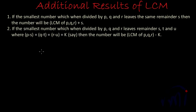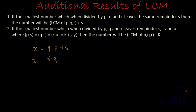Let that number be X. When we divide X by P, we get quotient Q1 and remainder S, so X can be written as Q1 times P plus S. Similarly, the same number when divided by Q, we get quotient Q2 and remainder S, so X can be written as Q2 times Q plus S.